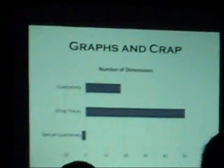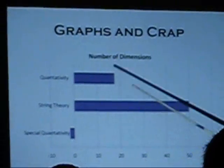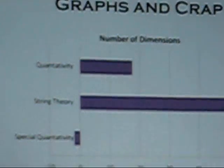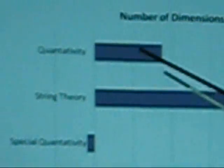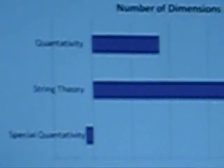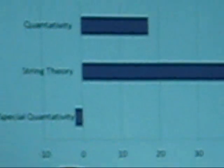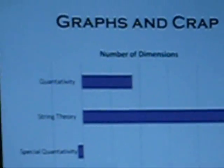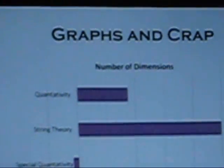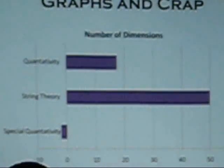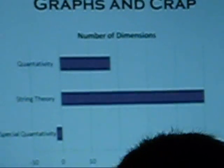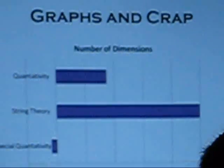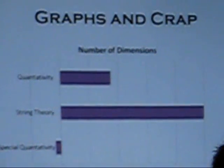Now you can see the relationship of the number of dimensions in our theories. Quantitivity uses about 17.5 spacetime dimensions. Stream theory is something like 50 — I don't know, maybe not. Special quantitivity is negative 2. This part of the theory is still a work in progress, but it should yield fascinating insights into our world.